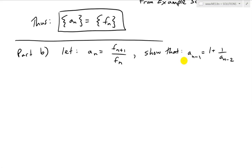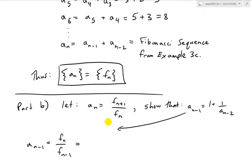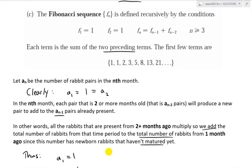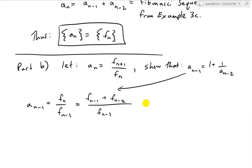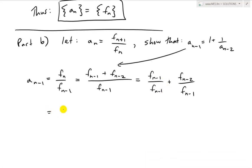Let's look at A_{n-1}. By replacing N with N minus 1, we get A_{n-1} equals F_n over F_{n-1}. Recall from the Fibonacci sequence that F_n equals F_{n-1} plus F_{n-2}. So we substitute on top to get F_{n-1} plus F_{n-2} over F_{n-1}. Splitting the fraction: this equals F_{n-1}/F_{n-1} plus F_{n-2}/F_{n-1}, which equals 1 plus F_{n-2}/F_{n-1}.